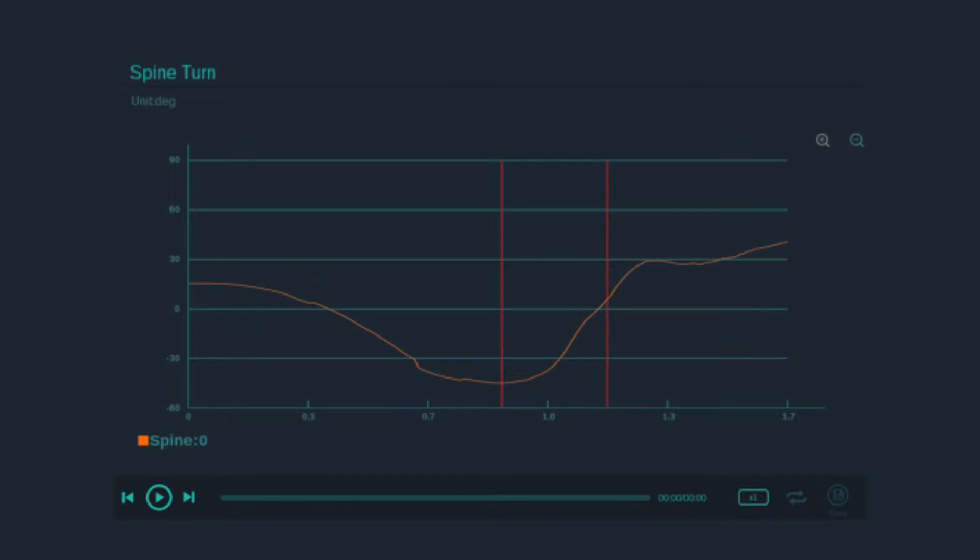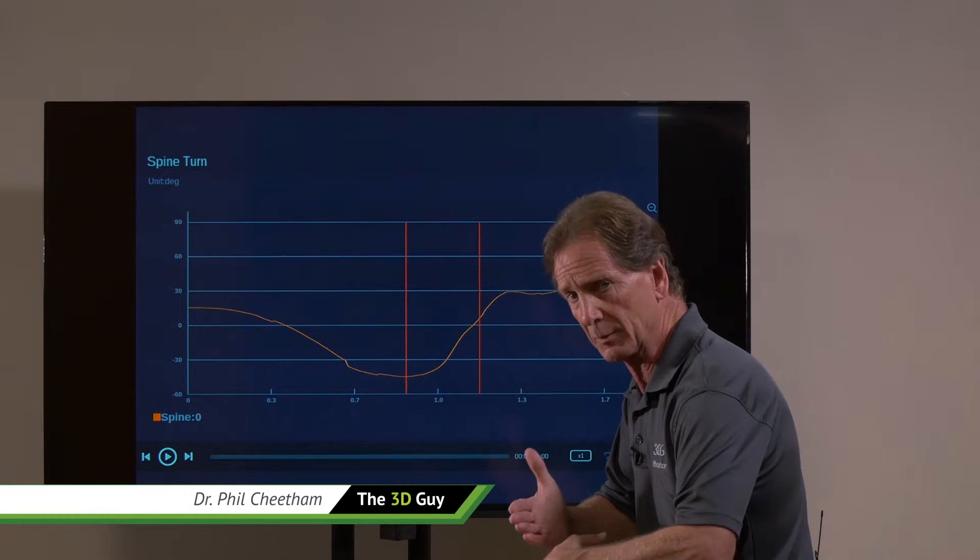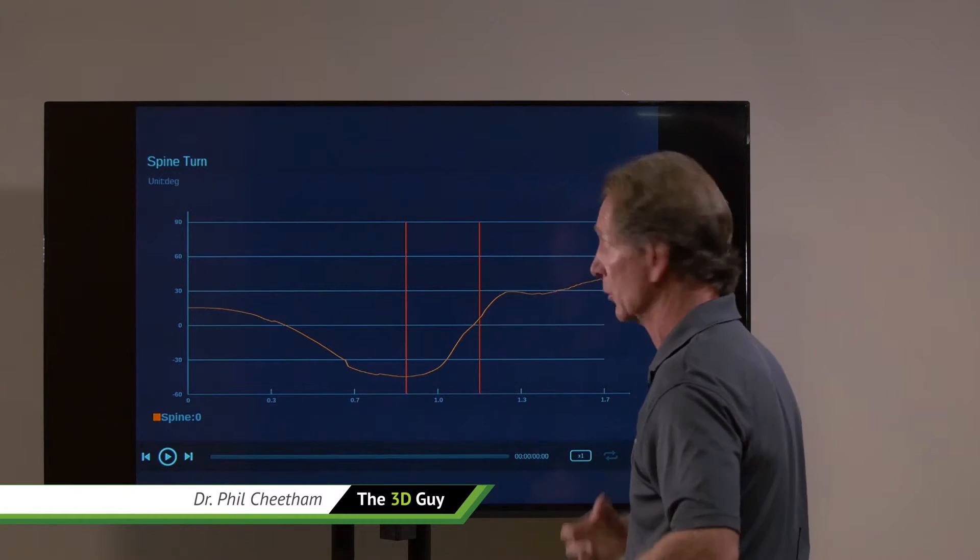So you can see at address, which is the beginning or the zero here, we've got about maybe 10 degrees or so. That's showing us that there's a little bit of coil at address. It's kind of showing us alignment. Perhaps there's a bit of misalignment between the pelvis and the ribcage.